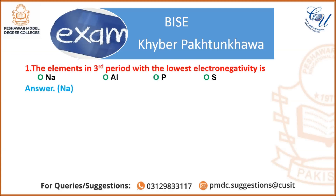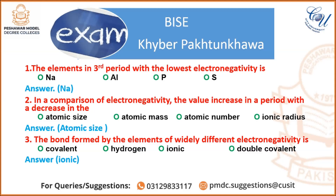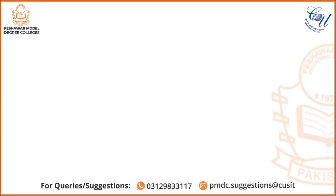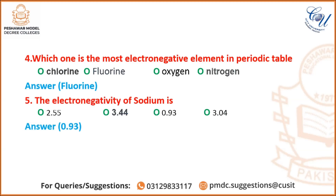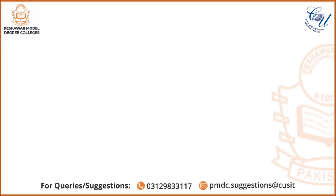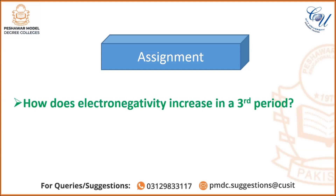Now, related MCQs on electronegativity. First: the element in the third period with the lowest electronegativity is sodium. Second: in a comparison of electronegativity, the value increases across a period and decreases with an increase in atomic size. Third: the bond formed by elements of widely different electronegativity is ionic. Fourth: the most electronegative element in the whole periodic table is fluorine. Fifth: the electronegativity of sodium is 0.93.